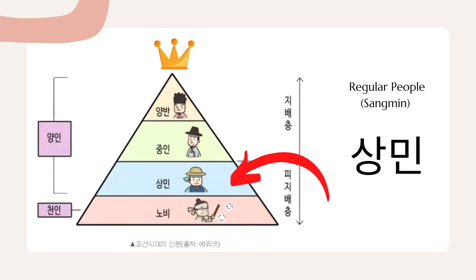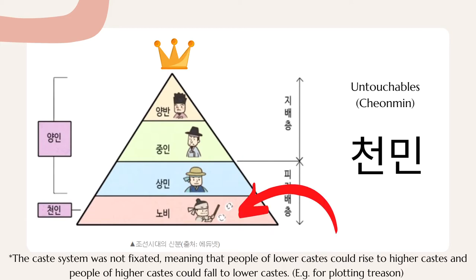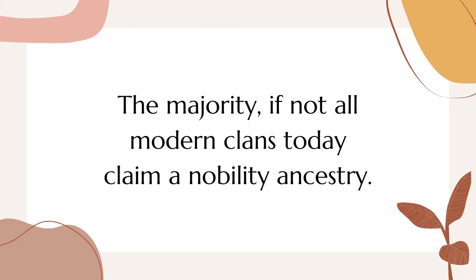Most importantly, they were not given proper names and did not have family names, to show that they were of lower caste and belonged to a high-ranking family. The majority of the population in the Joseon dynasty was made up of the Sangmin, the regular people, and the Chunmin, the untouchables. While uncommon, people in the lower castes also had surnames, but they were obviously not distinguished as nobility clans. You might have caught on to why this information becomes a problem when we look at the legitimacy of Korean clans.